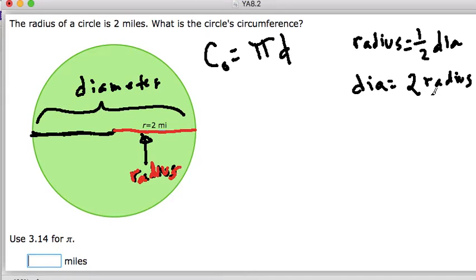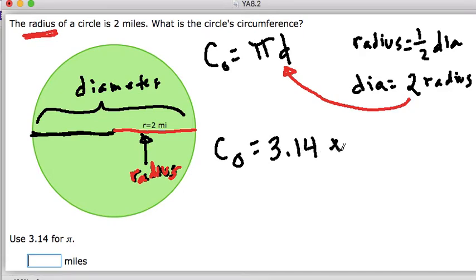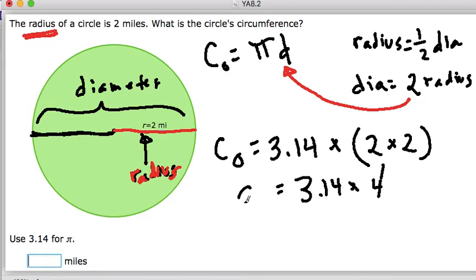So if you know the radius, and the diameter is two times the radius, and in this question they're giving you the radius and not the diameter, all you've got to do is multiply this by two. And you get the circumference of the circle equals 3.14 times the radius times two. And you know that that's four. So you have 3.14 times four equals the circumference of the circle. Circumference equals 12.56 miles.